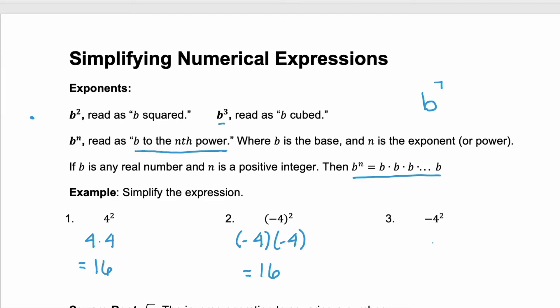Now look at example 3. Here there's no parentheses, so that exponent of 2 is only attached to the 4. This could also be written as negative 1 times 4 squared. So what we see here is negative 1 times 4 times 4, or negative 1 times 16, and this situation results in a negative 16.